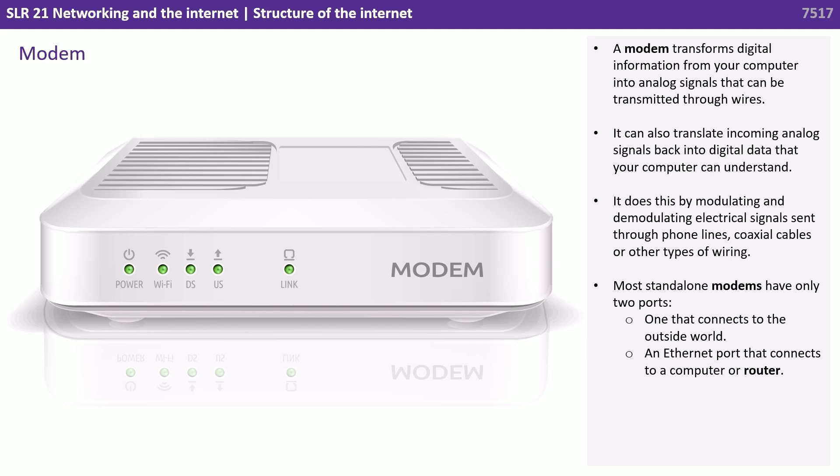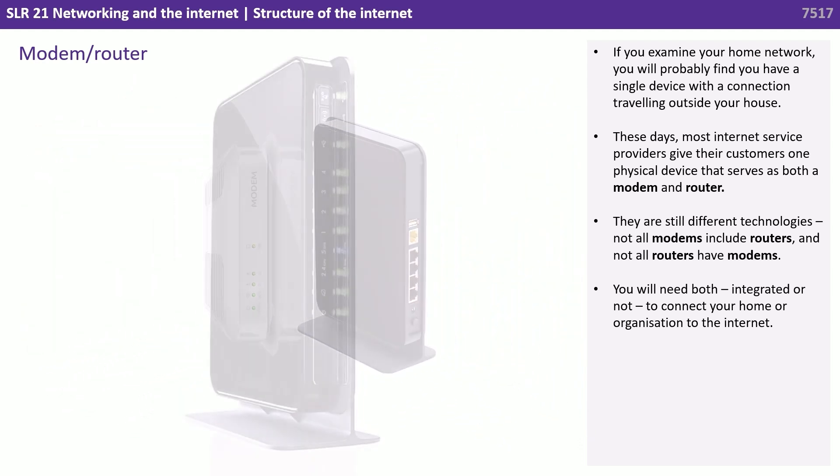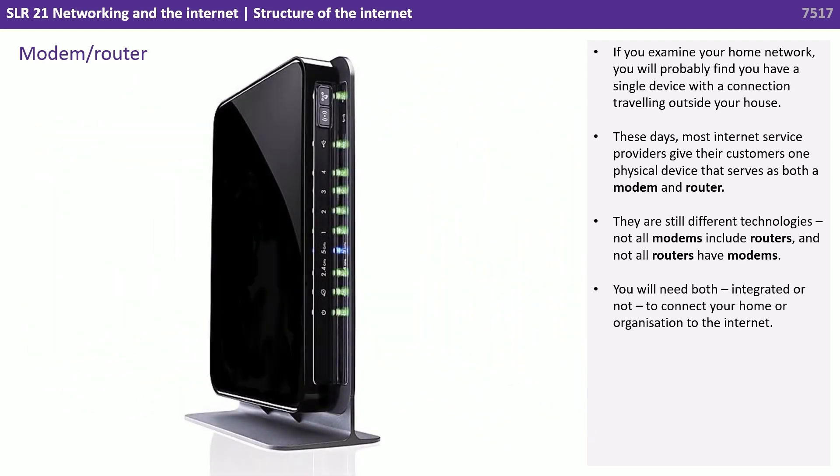Most standalone modems have only two ports: one that connects to the outside world and an ethernet port that connects to a computer or a router. If you examine your home network, you'll probably find you have a single device with a connection travelling outside your house. These days, most internet service providers give their customers one physical device that serves as both a modem and a router. Not all modems include routers, and not all routers have modems — you'll need both, integrated or not, to connect your home or organisation to the internet.